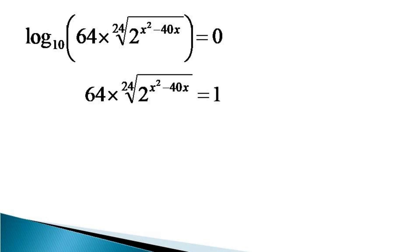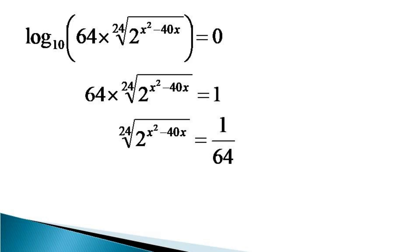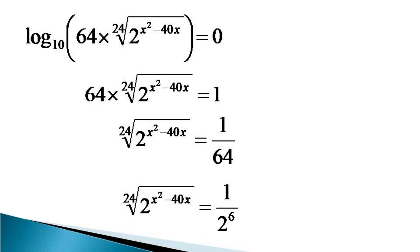We transfer 64 to the right hand side, so the right hand side becomes equal to 1 by 64. Since 64 can also be expressed as a power of 2, the equivalent equation becomes: the 24th root of 2 raised to the power x squared minus 40x is equal to 1 by 2 raised to the power 6.